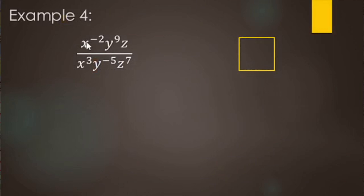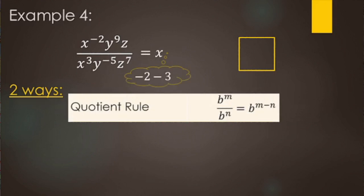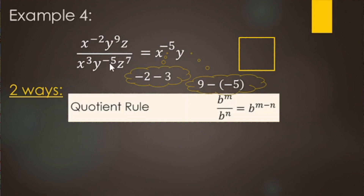Next example: X to the negative two, Y to the ninth, and Z in the numerator, over X cubed, Y to the negative fifth, and Z to the seventh in the denominator. Two ways to solve this. First, using the quotient rule: X to the negative 2 minus 3 gives X to the negative 5. For Y: 9 minus negative 5 — subtracting a negative becomes plus, so 9 plus 5 gives Y to the fourteenth. For Z: 1 minus 7 gives Z to the negative 6.